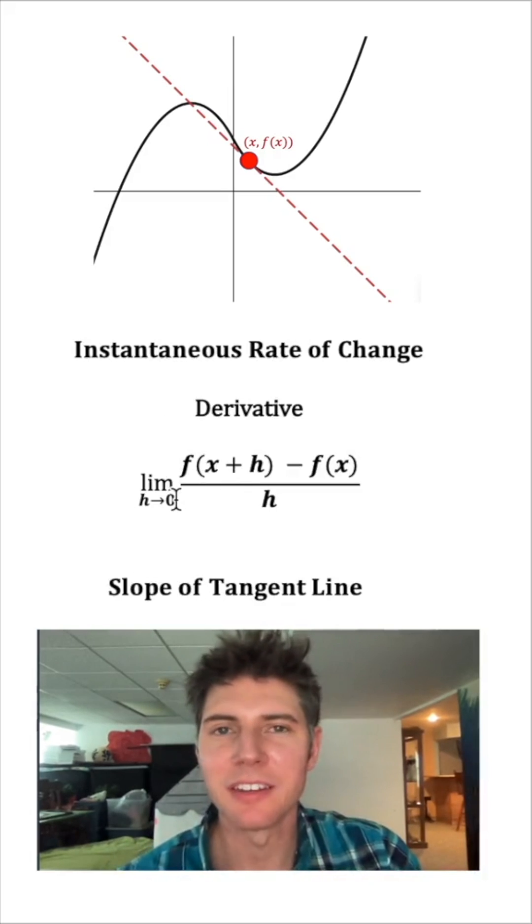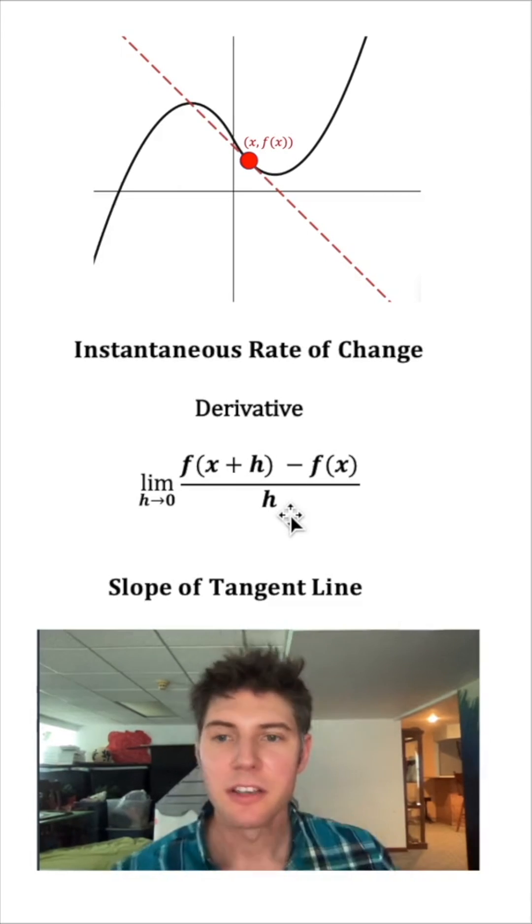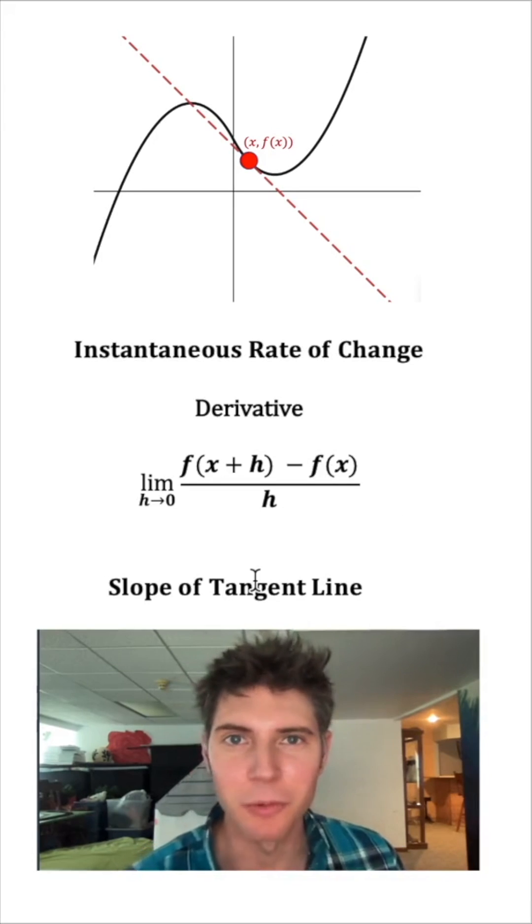So why did we make this a limit? Why don't we just say h is 0? Because if we made h is 0, that would make this division by 0, and we can't do division by 0. So this is the magic of calculus. Continue watching to see it work.